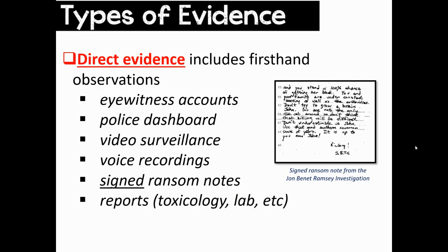Let's define each of these forms of evidence and look at some examples, starting with direct evidence. Direct evidence includes first-hand observations — eyewitness accounts, police dashboard video, any video surveillance footage, voice recordings, and signed ransom notes. On the screen there's a picture of the infamous ransom note found in the Ramsey home — the JonBenét Ramsey investigation. This was one of the major pieces of evidence, and investigators never did figure out who SBTC was. But the fact that the ransom note was signed makes this direct evidence. Any reports are also considered direct evidence, such as a toxicology report, DNA analysis, or any sort of lab report.